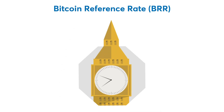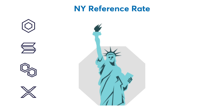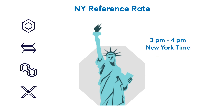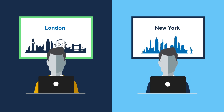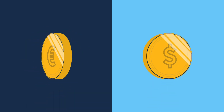For example, the Bitcoin reference rate is calculated between 3 p.m. and 4 p.m. London time. Some rates are also calculated during different hours, for example, 3 p.m. to 4 p.m. New York time. This allows traders to assess their cryptocurrency price risk more accurately, with timing aligned to their portfolio and region.